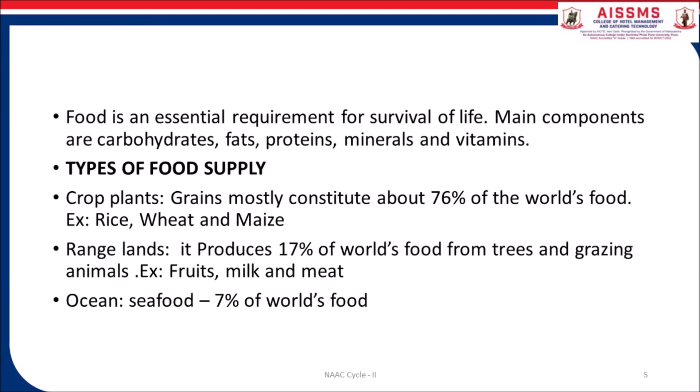Let us see the types of food supply. First, crop plants — grain mostly constitutes about 76% of world food, examples are rice, wheat and maize. Second, rangelands — it produces 17% of world food from tree and grazing animals, examples are fruit, milk and meat. Then we have the ocean where we get seafood, which is 7% of world food.